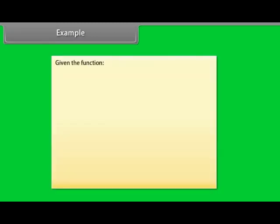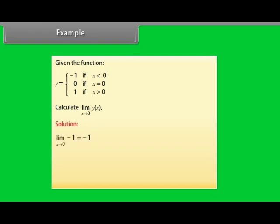Given the function y = −1 if x<0, y=0 if x=0, y=1 if x>0, calculate lim(x→0) y(x). Solution: lim(x→0⁻) of −1 is −1, and lim(x→0⁺) of 1 is 1. Since the left and right limits differ, the function has no limit at x=0.